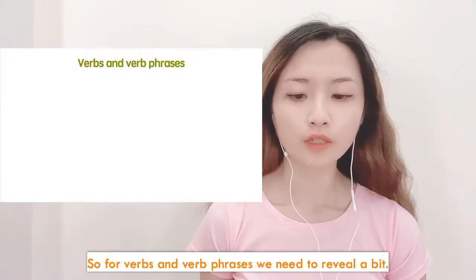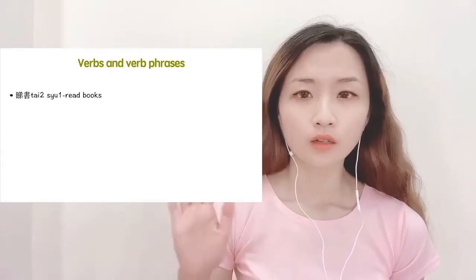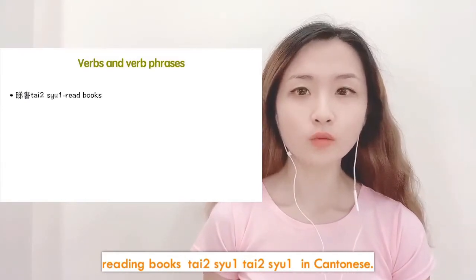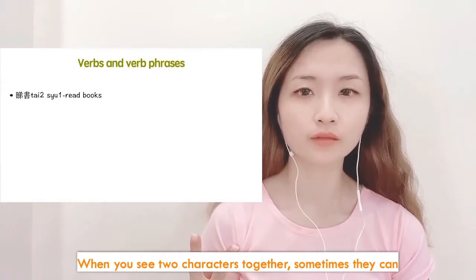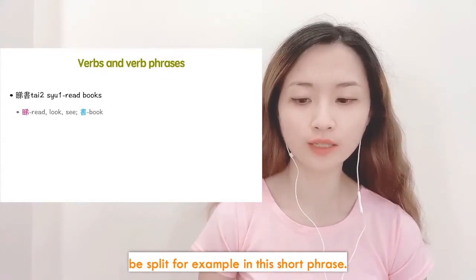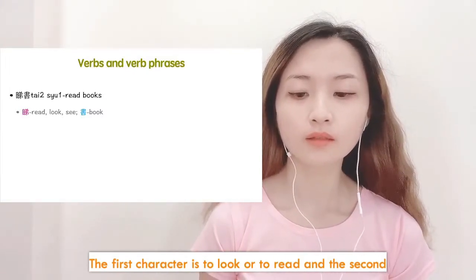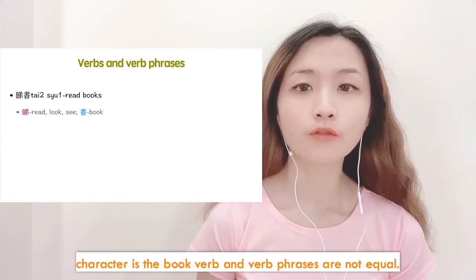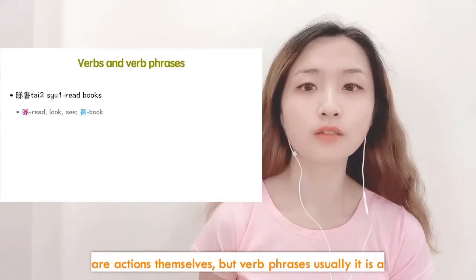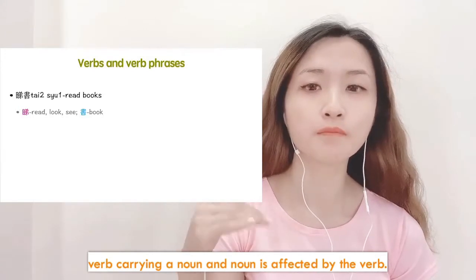So for verbs and verb phrases, we need to review a bit. In Cantonese, when you see two characters together, sometimes they can be split. For example, in this short phrase, the first character means 'to look' or 'to read' and the second character means 'book.' Verbs and verb phrases are not equal — verbs are actions themselves, but verb phrases usually consist of a verb carrying a noun, and the noun is affected by the verb.